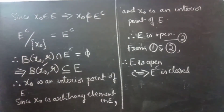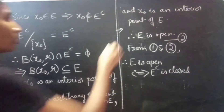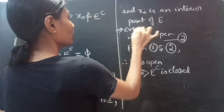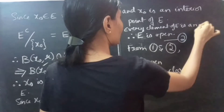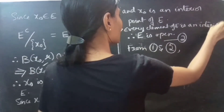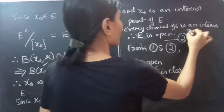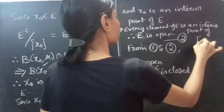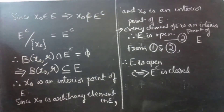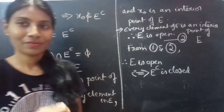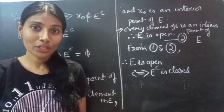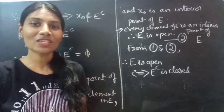From Case 1 and Case 2, we conclude that E is open if and only if E complement is closed. By the definition of open set, every element of E is an interior point of E. This completes the proof. We have seen a theorem on open and closed sets. Hope you understand. If you have any doubts, leave your comments below. See you in the next video. Bye-bye.